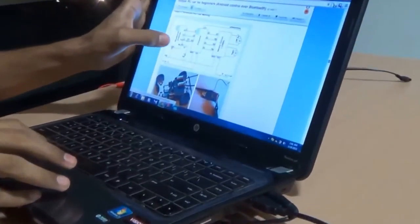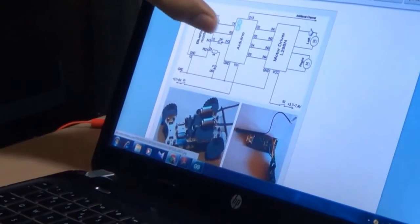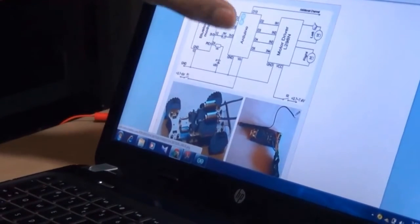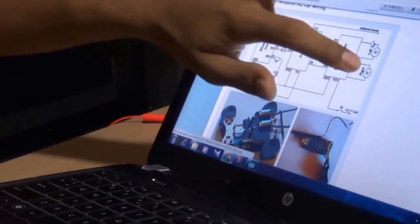And this is the circuit board for this and this Bluetooth module and this TX to RX to TX and TX to RX, VCC 3 volt and ground. These four inputs go to the motors.